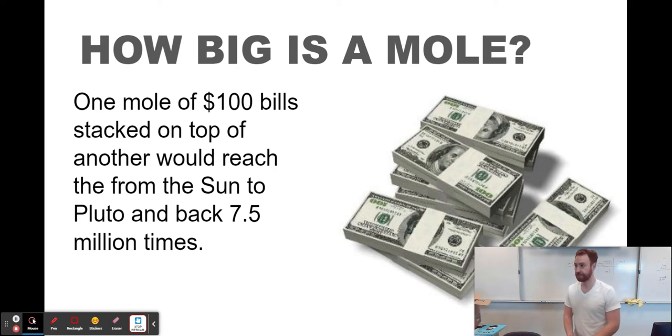Or here's an example that I really like. If you inherited a mole of pennies on the day you were born and you spent a million dollars a second until you died at the age of 100 years old, you would have spent less than a tenth of a percent of your money. Spending a million dollars a second for 100 years would be like one one-hundredth of one percent of your money if you had a mole of pennies.